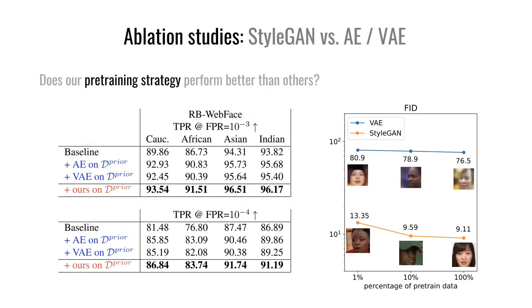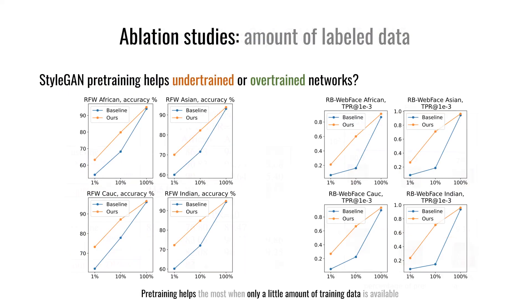The design choice of StyleGAN for pre-training is confirmed by comparing it to standard autoencoders. The improvement can be attributed to the higher fidelity of StyleGAN generations and its better scalability. The procedure is especially helpful for tailored face recognition applications when obtaining a lot of labeled data is problematic.